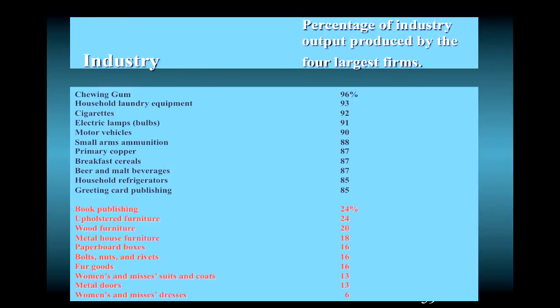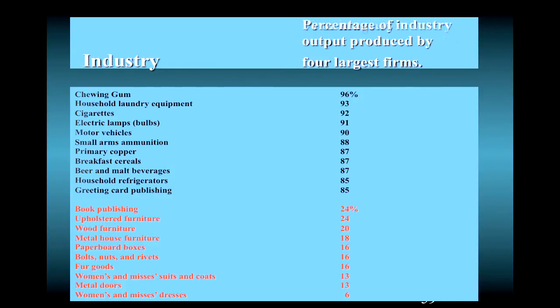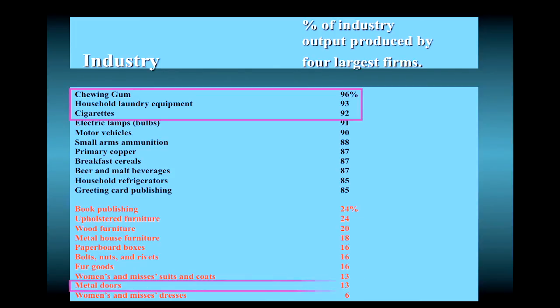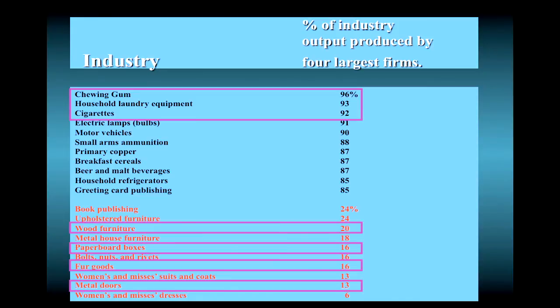This table lists the concentration ratios for a sample of industries. Those industries in black are generally considered oligopolies, while those in red are generally characterized as monopolistic competition. Note how high market concentration is in oligopolies such as chewing gum, cigarettes, cereals, and greeting cards — in these industries, four firms have over 85% of the market. In contrast, market concentration is quite low for monopolistically competitive industries such as metal doors, fur goods, paperboard boxes, and wood furniture.